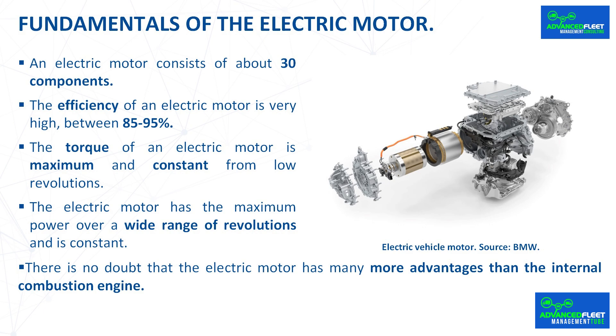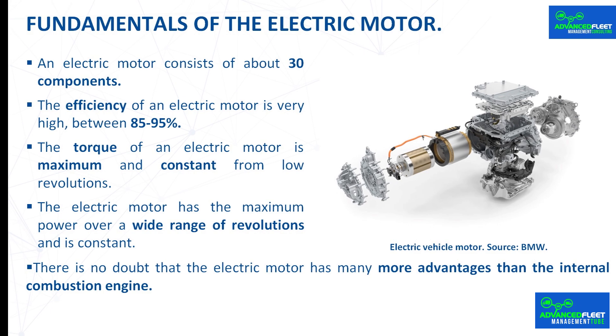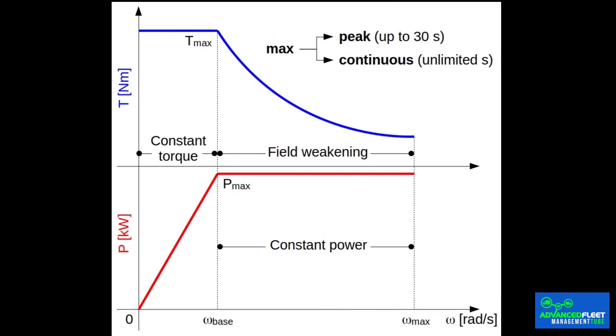Electric motor. An electric motor consists of about 30 components. As all the rotating elements are on one shaft, very few vibrations are produced in its operation compared to an internal combustion engine that has about 2000 components and the vibrations it produces, it is also much heavier. The efficiency of an electric motor is very high between 85-95%, reaching up to 97% using silicon carbide inverters. The internal combustion engine has an efficiency of 30%. The torque of an electric motor is maximum and constant from low revolutions, so there is no need for gears and electric vehicles are automatic.